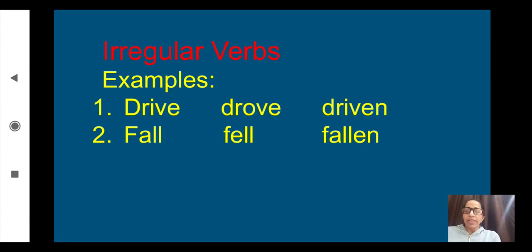Now see the examples of irregular verbs. These are called irregular because they do not follow any certain pattern. Examples: drive, drove, driven; fall, fell, fallen; drink, drank, drunk; leave, left, left—and many more which we use in our daily life.